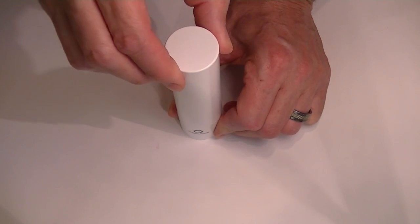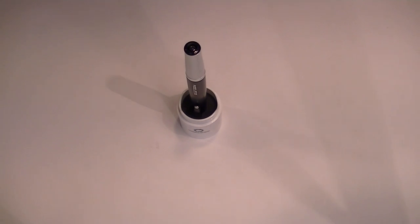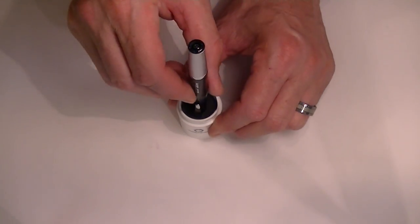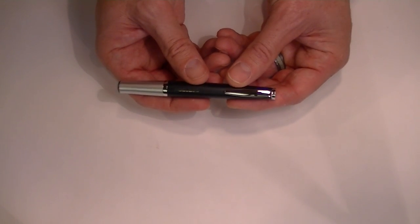You can remove the top section of the case by simply pulling it off. If you'd like to display the pen in the bottom section, it just holds it upright. You can remove the pen just by simply pulling it out.